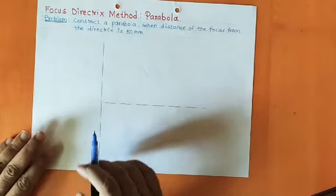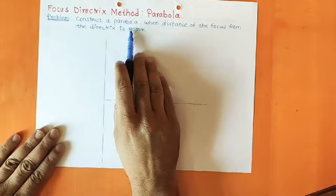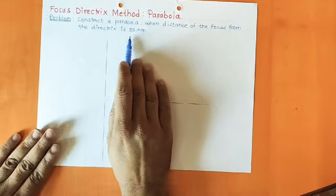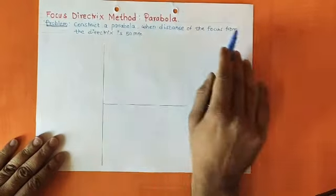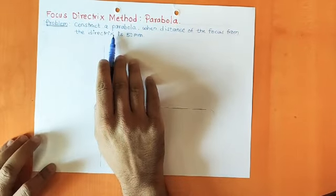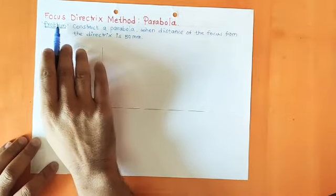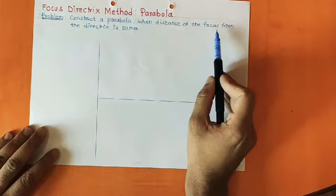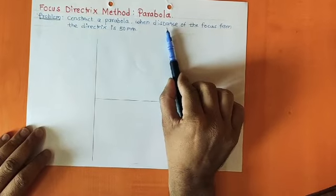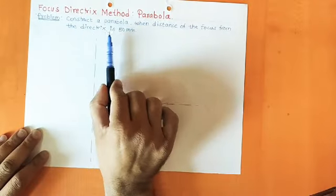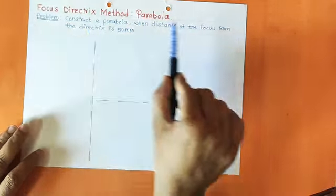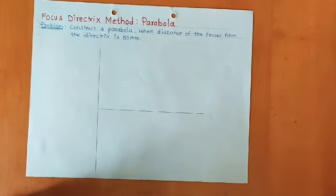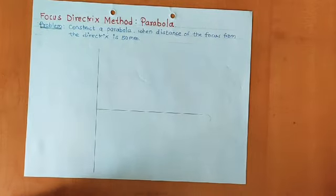We will directly go through the statement: construct a parabola when the distance of focus from directrix is 50 mm. In the problem statement, nothing explicitly mentions the focus directrix method, but if we closely observe the given data — distance of focus from directrix is 50 mm — by this given data itself, you have to understand that the problem is for a parabola curve based on the focus directrix method.